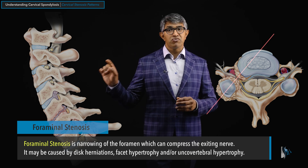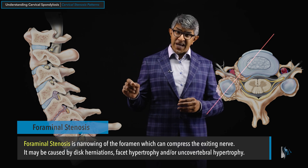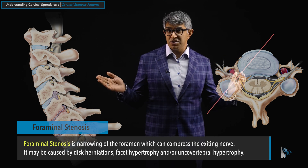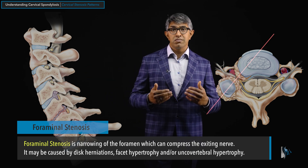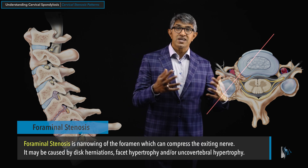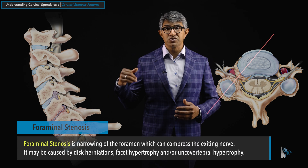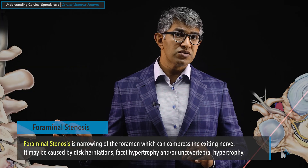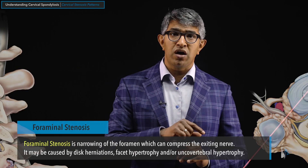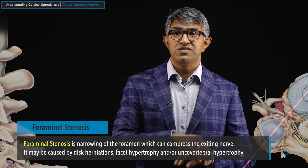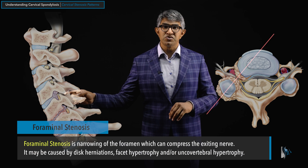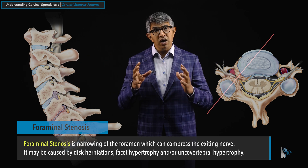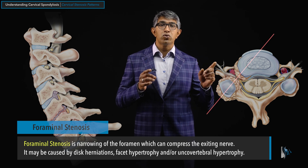More formally, foraminal stenosis is narrowing of the neural foramen, which can compress the exiting nerve. I say 'can' because we see people with foraminal stenosis who may have no symptoms. Classically, someone comes in with right arm pain, and we'll find a lot of right-sided foraminal stenosis — but very frequently also left-sided foraminal stenosis with no left arm symptoms. Foraminal stenosis can be caused by disc herniations, facet hypertrophy, or uncovertebral hypertrophy, but it always means narrowing of this little porthole called the neural foramen.